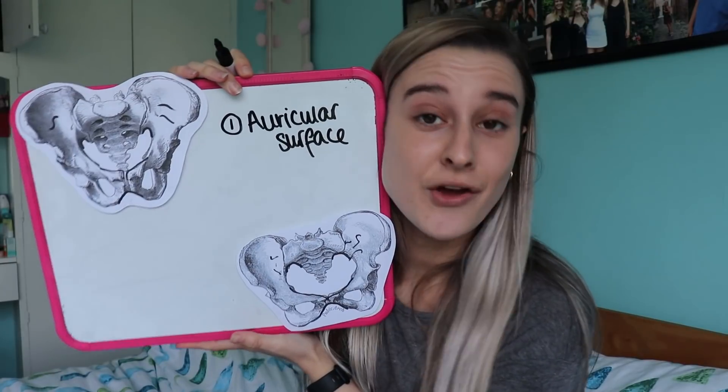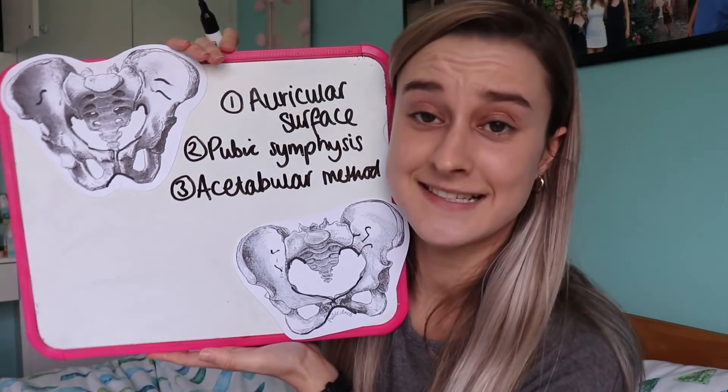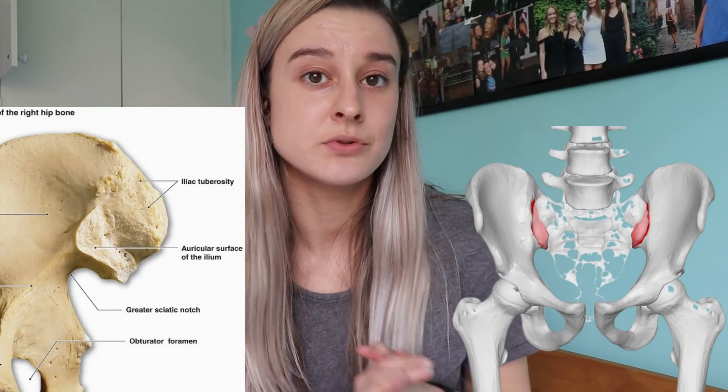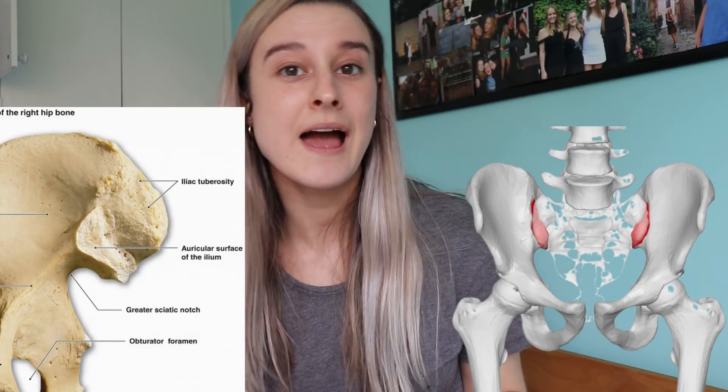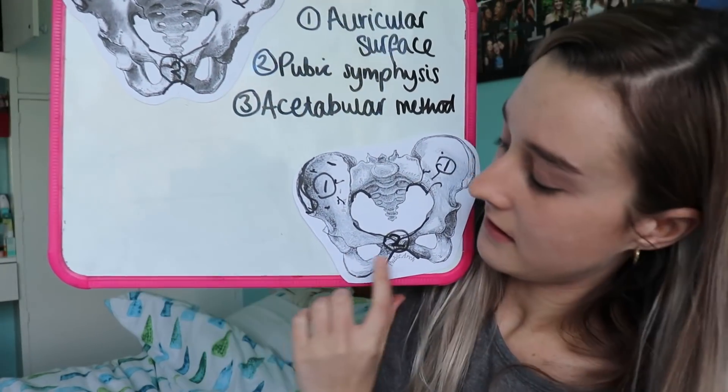Like with the skull, you can also age a skeleton from the pelvis, and there are three ways of doing this. The first is with the auricular surface. The second is with the pubic symphysis. The third is the acetabular method. For method number one, we are looking at the auricular surface, which is where the pelvis joins the sacrum. In older individuals, the auricular surface will show more signs of wear, degradation and densification. There will also be a breakdown of the marginal lipping which joins the two together.